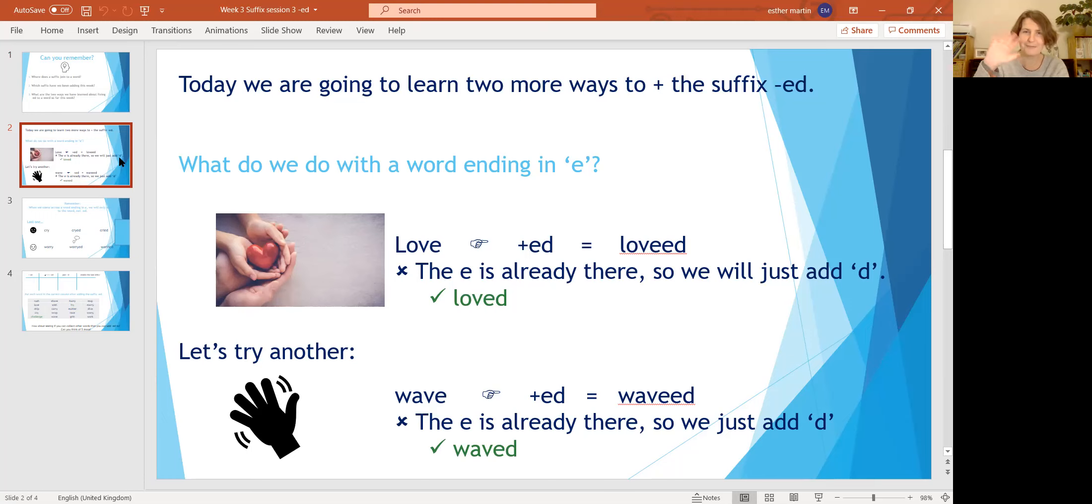Let's look at the second one. Oh, it says 'wave'. Can you give me a wave? Lovely! So again, 'wave' has an 'e' at the end. If I add -ed, then I'd have this word 'wavied'. That doesn't look like the word 'waved', does it? The 'e' was already there, so we're just going to add 'd'. We're not going to add -ed. So you need to look out for words that end in 'e', and if they do, you just add 'd'.